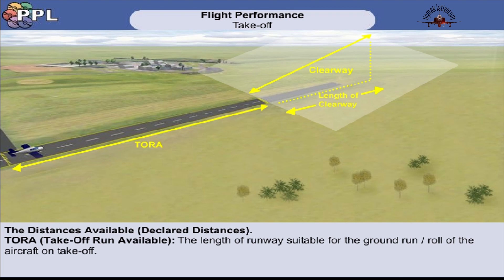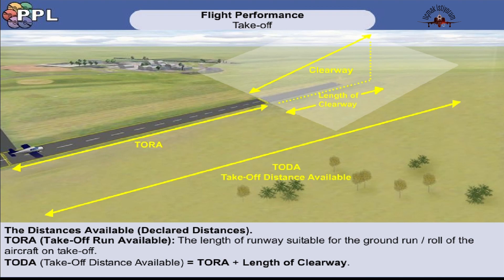However, at some airfields a clearway can be found. This is defined as an area beyond the end of the runway in the direction of take-off, under the airport's authority, which is clear of any significant obstacles and suitable for an aircraft to make its initial climb to the screen height. With the addition of the clearway, we have what is called the take-off distance available, or TODA for short. This is therefore TORA plus any length of clearway.